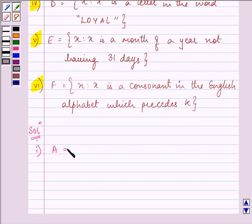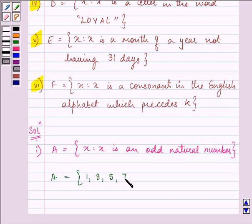First set is given to us as A is equal to x such that x is an odd natural number. So there is no condition attached to it. So thus all the odd natural numbers will be the elements of set A and that will be written as A is equal to 1, 3, 5, 7, 9. And since there is no upper limit given to us, we will end it at not a particular element. So this is the answer of our first part.